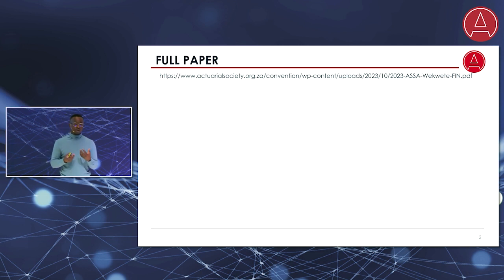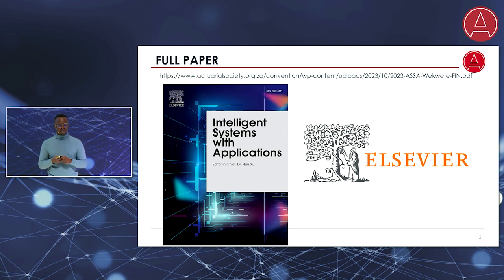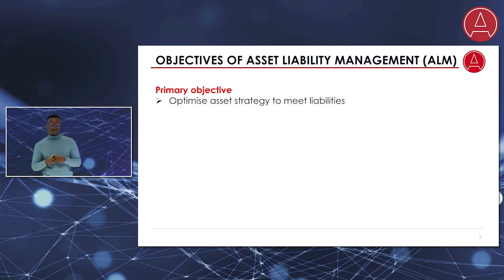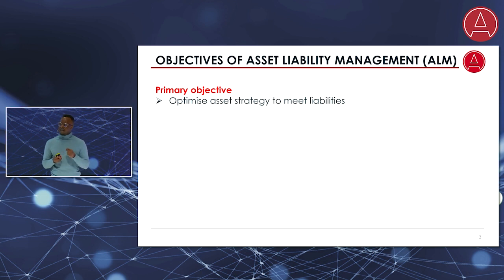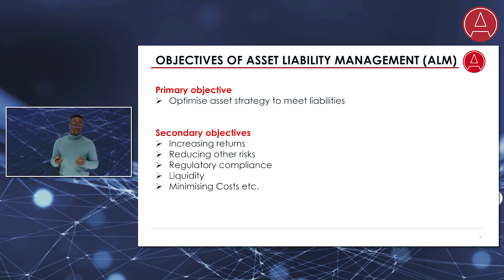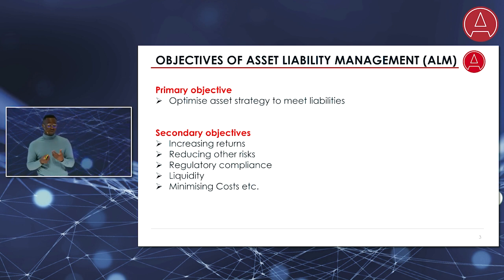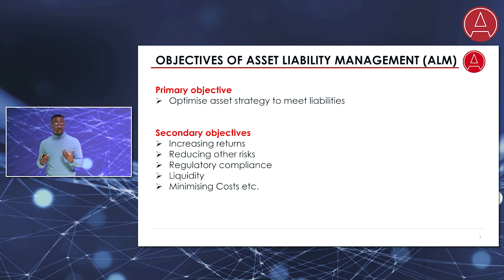This work we're going to summarize today is available on the convention program, and there's also a full paper that's been recently accepted in the International Journal called Intelligent Systems with Applications, so it will live there forever as well. It is worth reminding ourselves of the ultimate objectives of ALM, which is to come up with an optimal asset allocation strategy such that we minimize the likelihood of failing to meet liabilities. We also often have secondary objectives and need to simultaneously optimize for those as well. ALM is critical in all fields of actuarial science and quantitative finance, especially when risks, liabilities, and market conditions are uncertain.